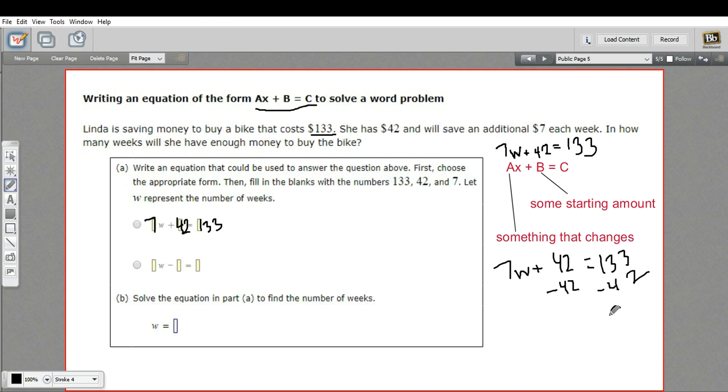And I think that's going to be 91. So 7w equals 91. And then we can divide both sides by 7.